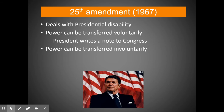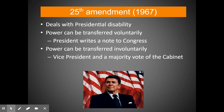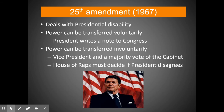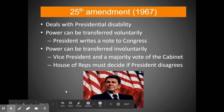But what happens when something is believed to have happened to a president and the president doesn't want to leave office? The 25th Amendment can force a showdown. If the president suffers from some disability and others in government feel it prevents the president from doing their job, there is a mechanism to remove them. If the vice president and a majority of the cabinet agree, they can elevate the vice president to the presidency against the president's will. If the president refuses to give up power, it goes to the House of Representatives to decide. This has never been used.